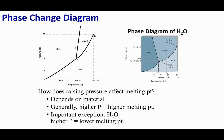Now let's look at the effects of pressure on the melting point. I'll do the same analysis: pick pressure A, cross the solid-liquid barrier, and drop down to find the melting temperature. Then I increase the pressure to point B, go across, and drop down again. In the first graph, increasing pressure results in a higher melting temperature.